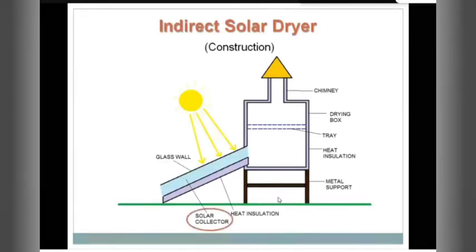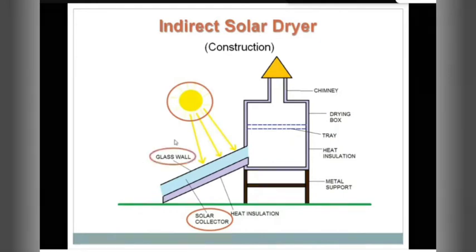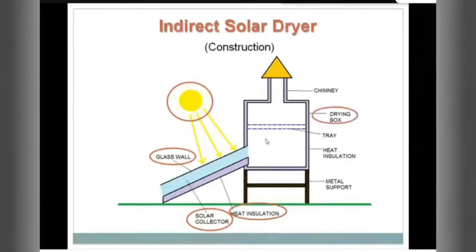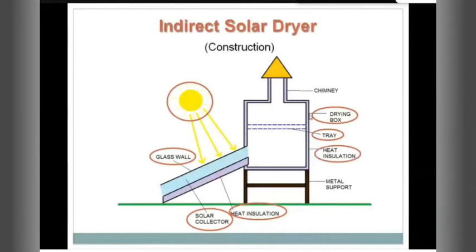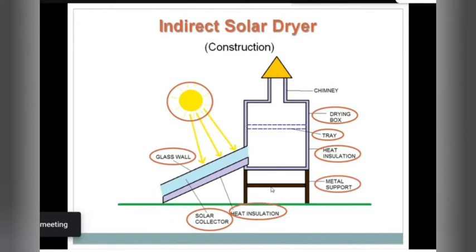Here you can see the indirect solar dryer. This is the solar collector — whatever sun rays try to communicate with the drying box, the collector passes it on. Sun rays fall on the glass wall of the collector; from the lower side it is heat insulated so heat may not get lost. This is connected to the drying box, which has a tray with perforations so air movement is not restricted. The drying box is also heat insulated on all sides, meaning sun rays falling on it won't directly affect the produce. It has metallic supports and a chimney for expulsion of hot air.